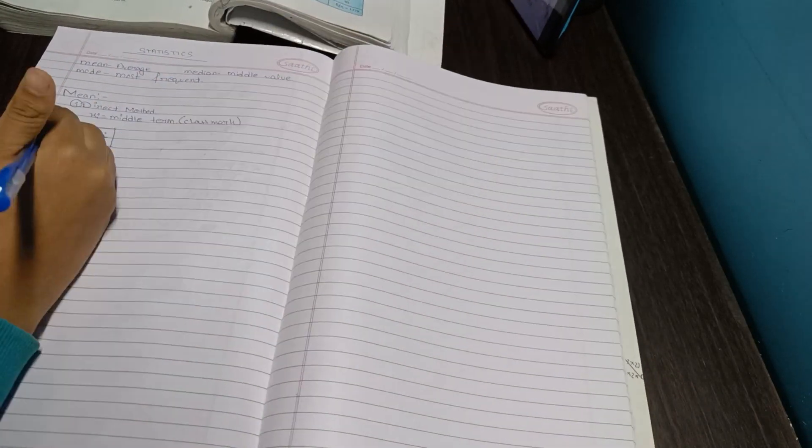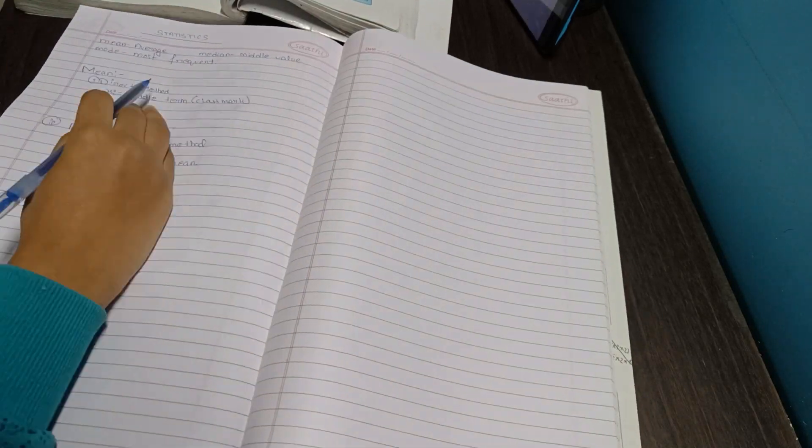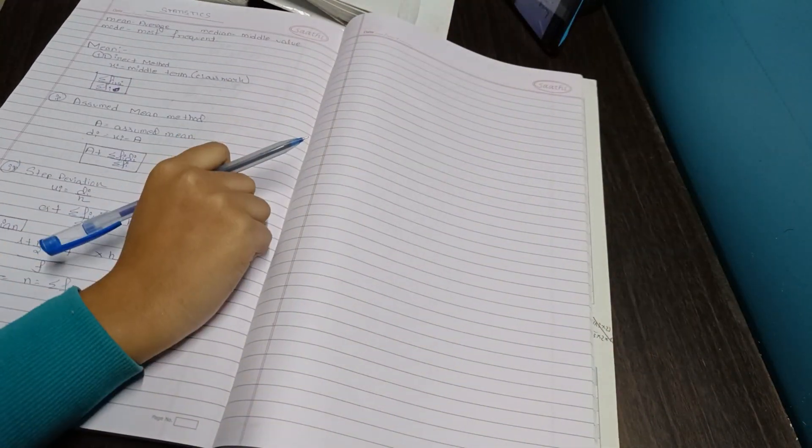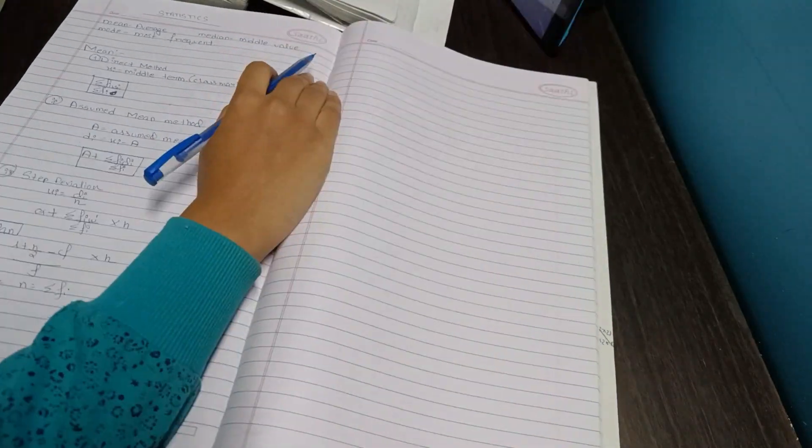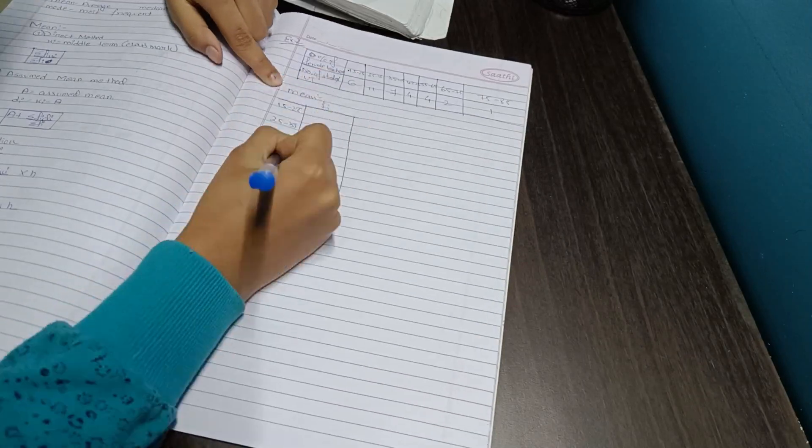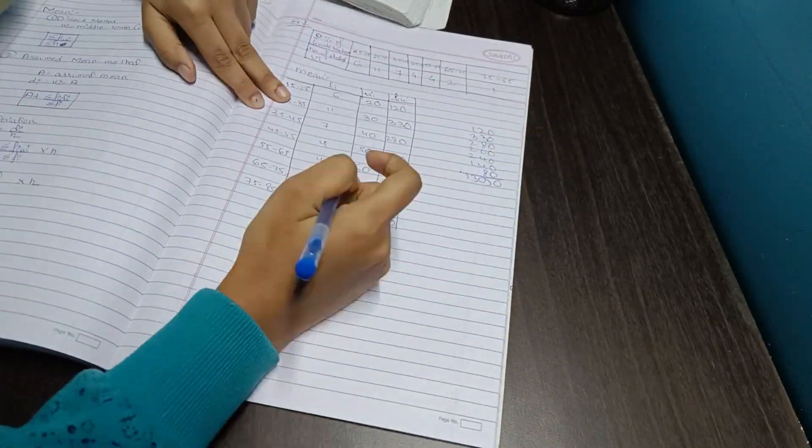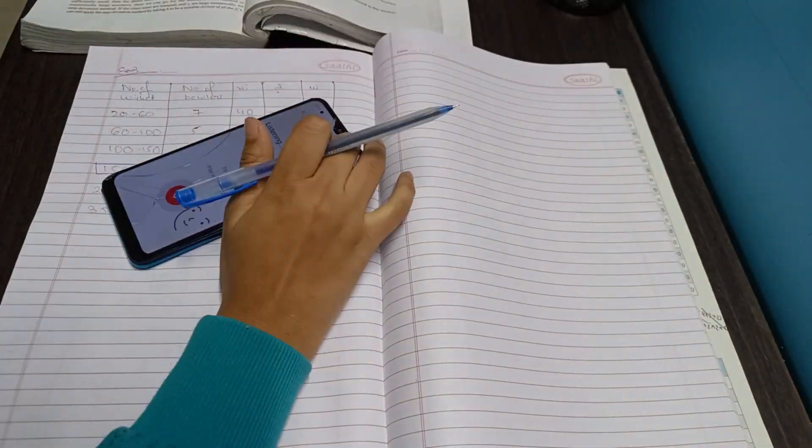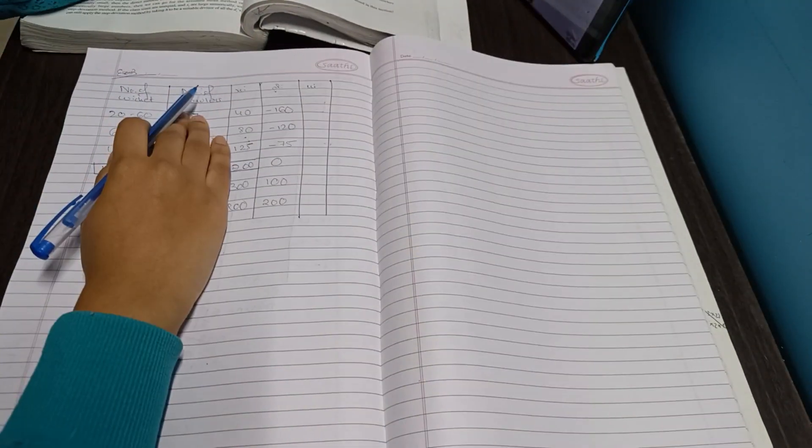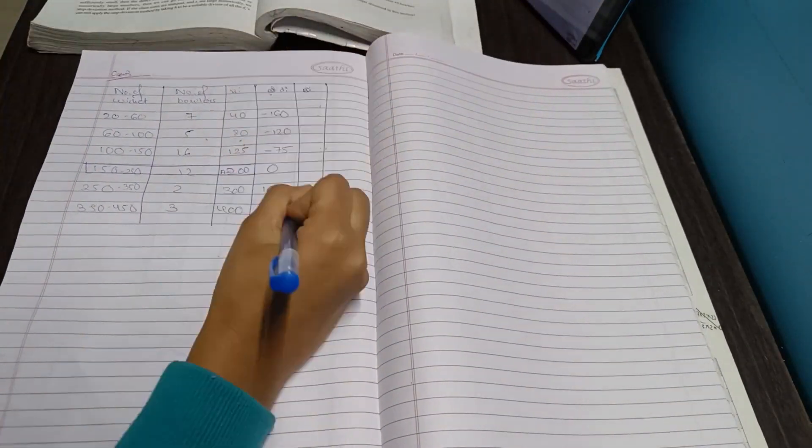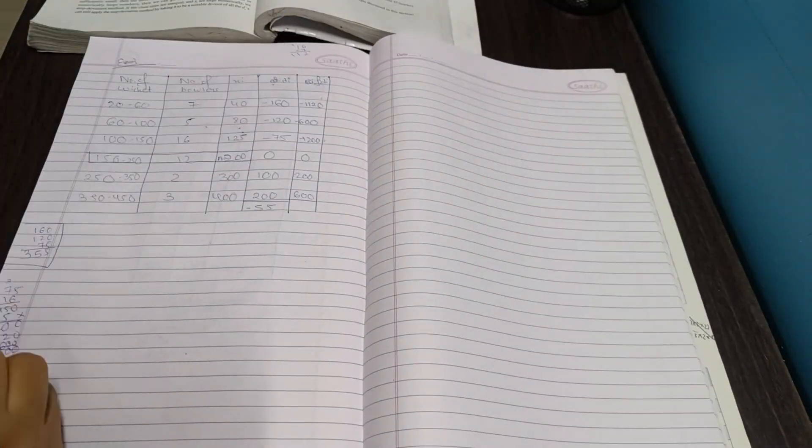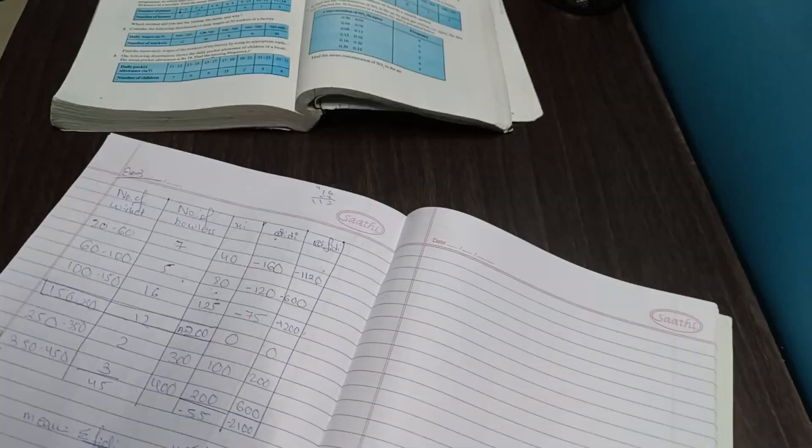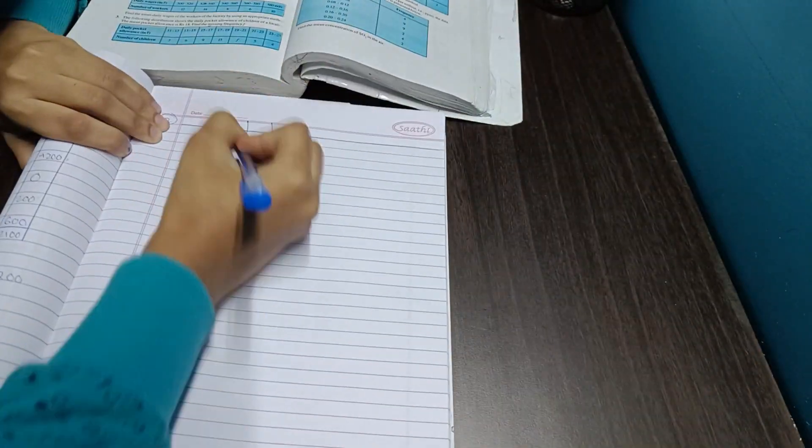In our school, my English teacher conducts an English test every alternate day because our syllabus is over for every single subject, so there are revision tests going on currently. Obviously there are remedial classes also, but the remedial classes are only for the first hour. Our English teacher conducts a test every alternate day and she takes the test of three to four chapters combined. In those tests she asks three markers and six markers mostly.